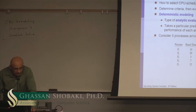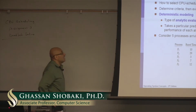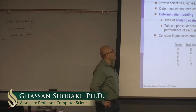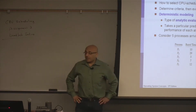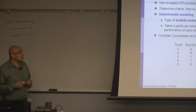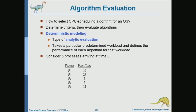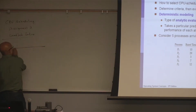The last topic in this chapter is how do we evaluate scheduling algorithms. One evaluation method is deterministic modeling, which is based on drawing the Gantt chart for a process and calculating the average waiting time.